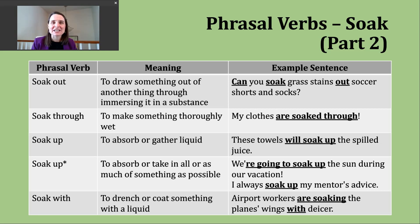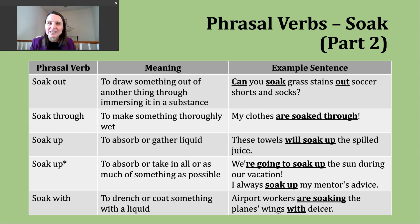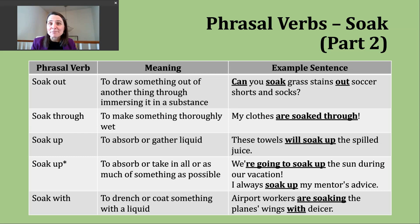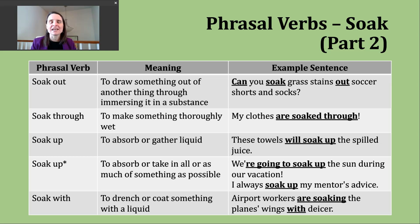The last phrasal verb we'll discuss is soak with. Again, we're describing drenching or coating something with a particular liquid — that liquid follows the preposition with. An example: airport workers are soaking the plane's wings with de-icer. This is an example of the present progressive. You might have seen this happen if you've flown during winter months when it's cold with snow and ice — de-icer is a liquid generally used on the wings of the plane to help it take off safely.